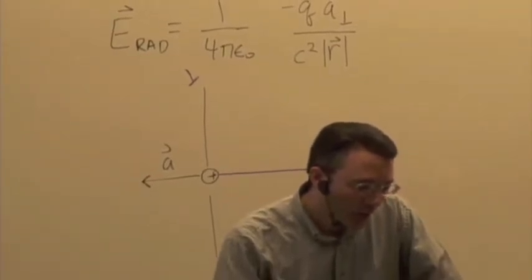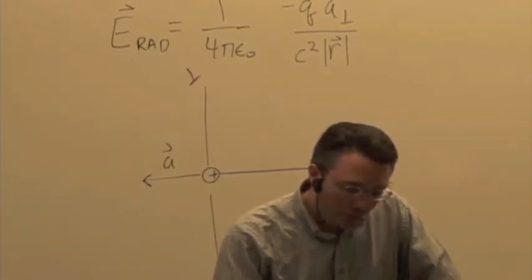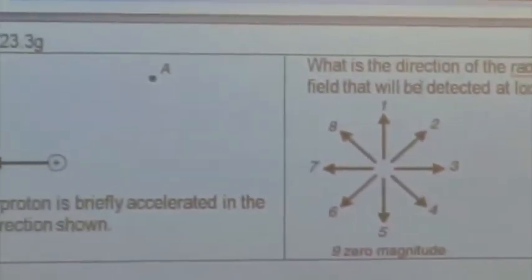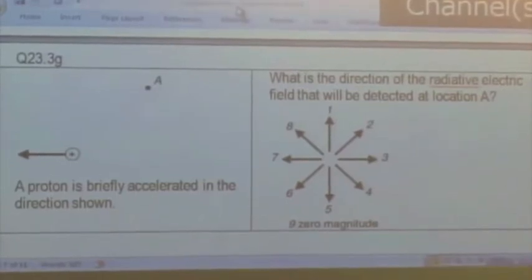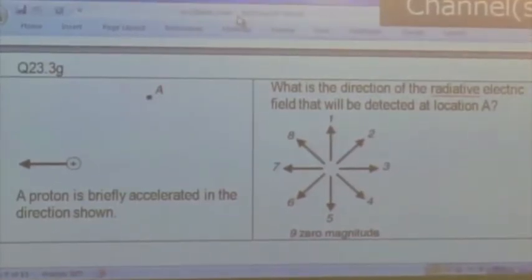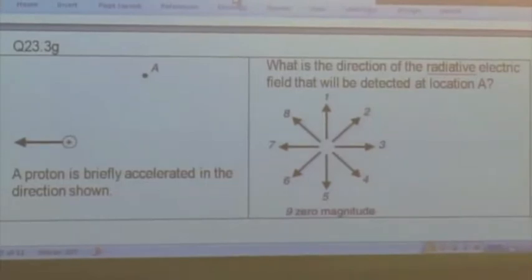That's only going to show up when you're off axis, off of that acceleration direction. Okay, no big problems there. Let's try this one. A proton has been briefly accelerated in the direction shown. What's the direction of the radiative electric field that will be detected at location A? So now you have to go through the steps, apply this formula to figure out the direction.